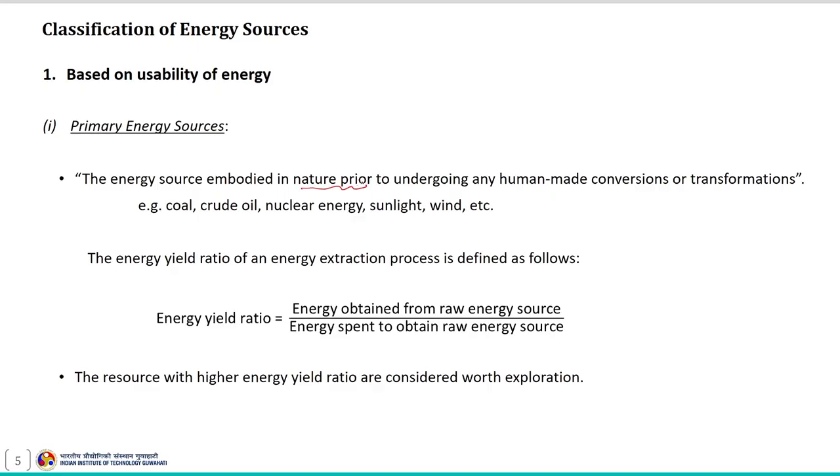Starting with classification based on usability of energy, it is sub-classified into primary energy source and secondary energy source. Primary energy sources are those embodied in nature prior to undergoing any human-made conversion or transformation. Examples of these resources are coal, crude oil, nuclear energy, sunlight, wind, etc. These resources are generally available in raw form and are therefore known as raw energy sources.